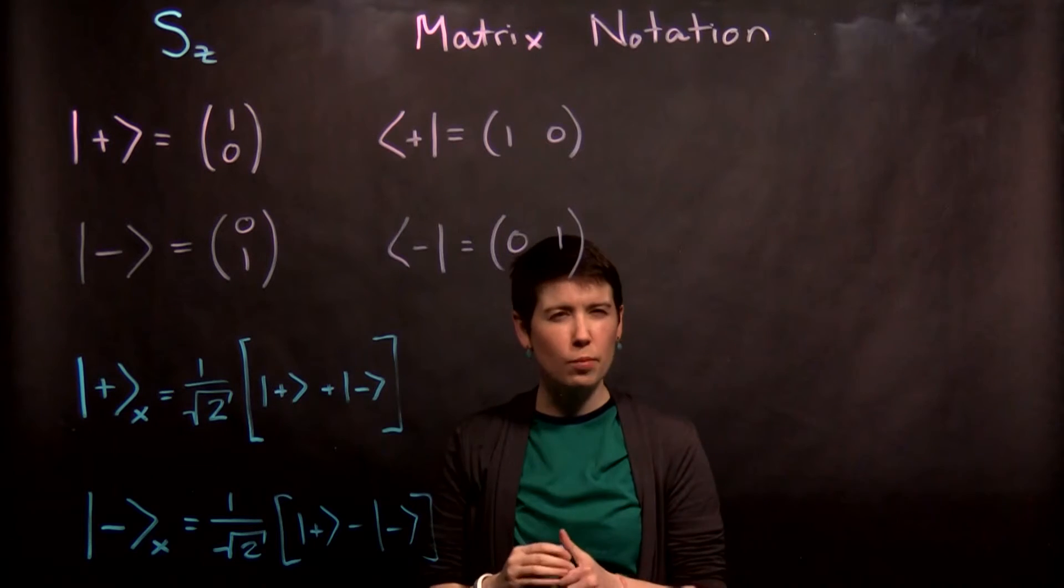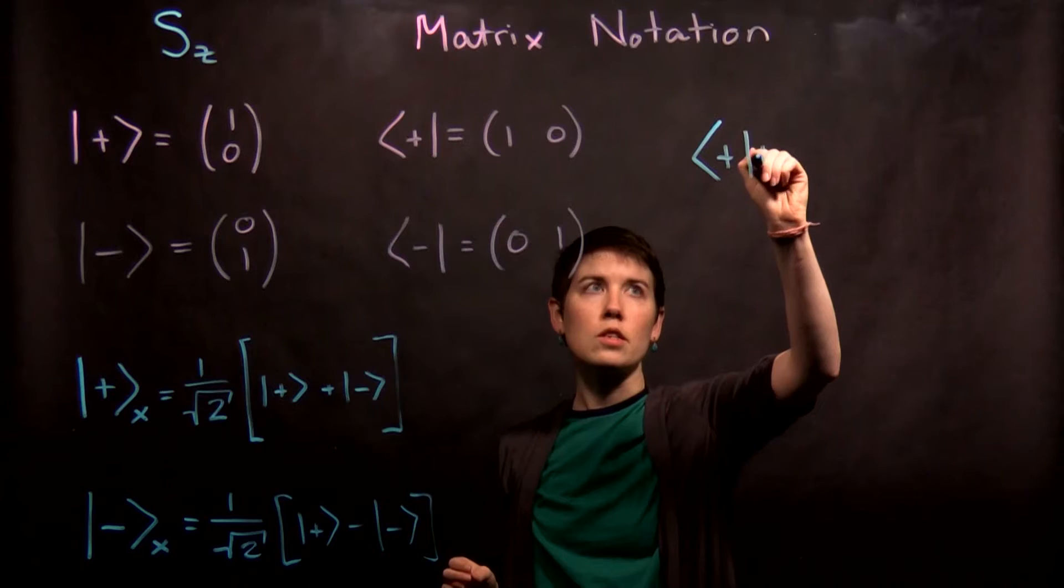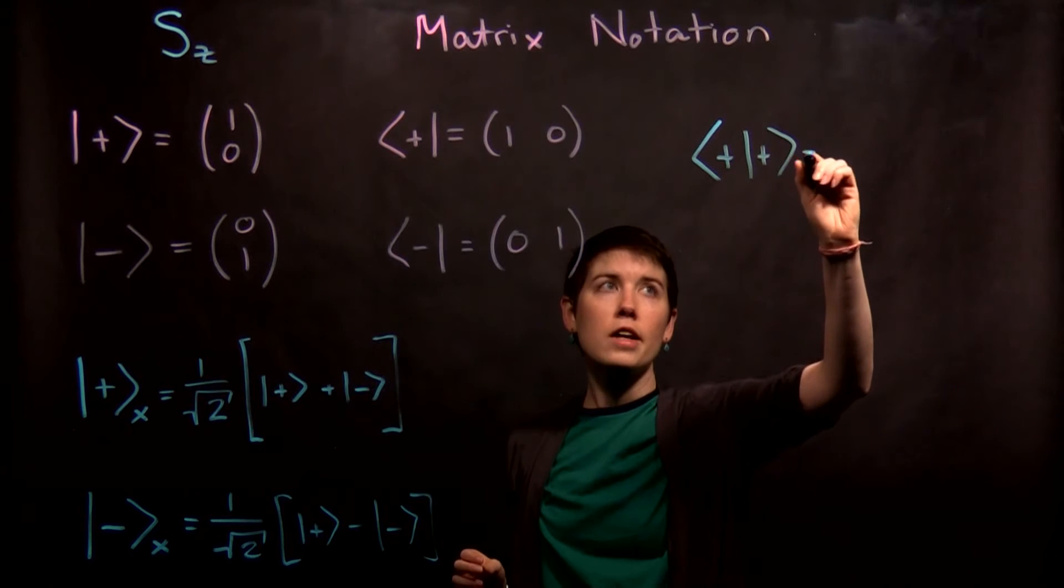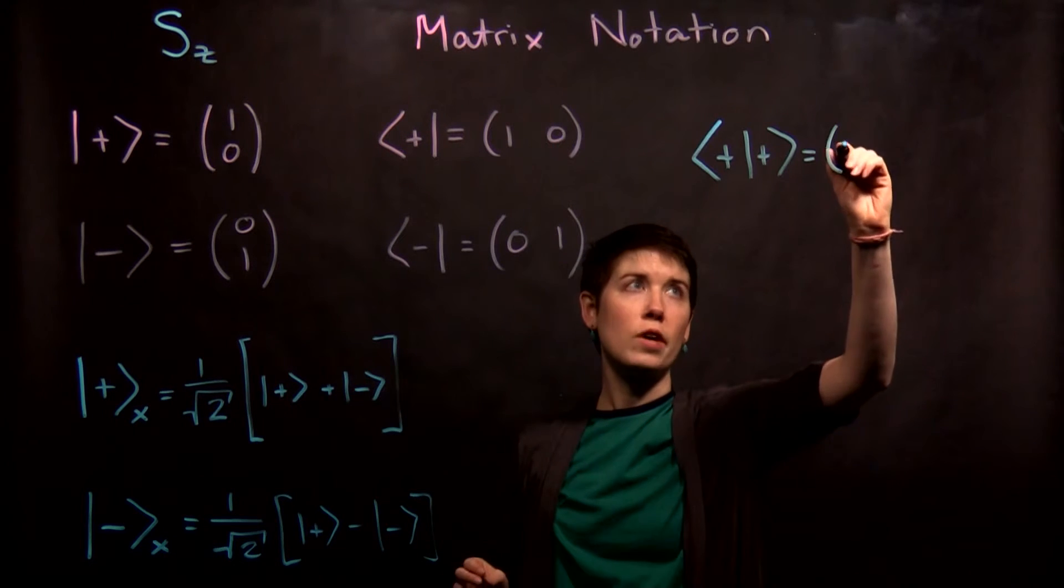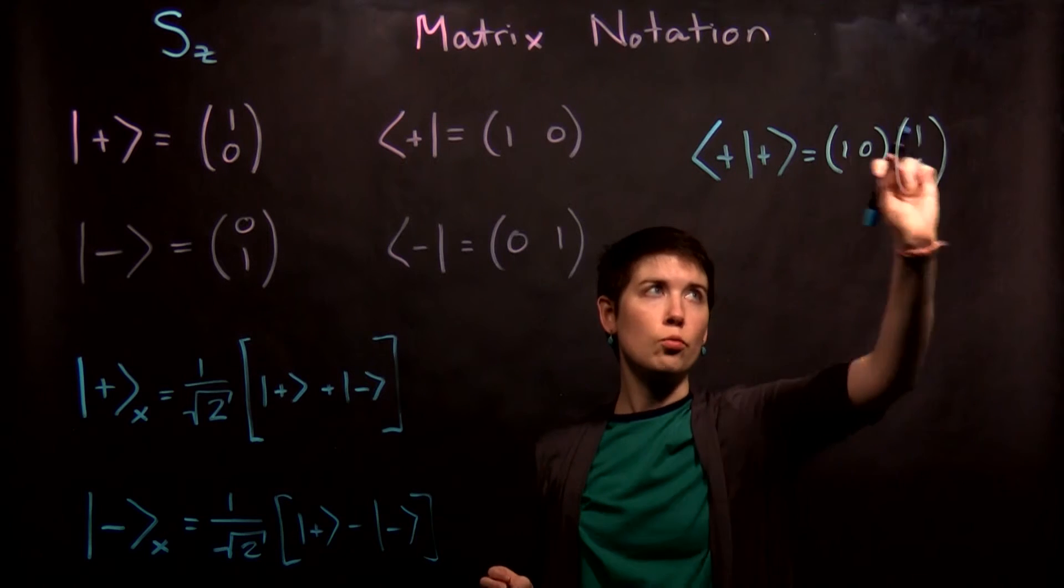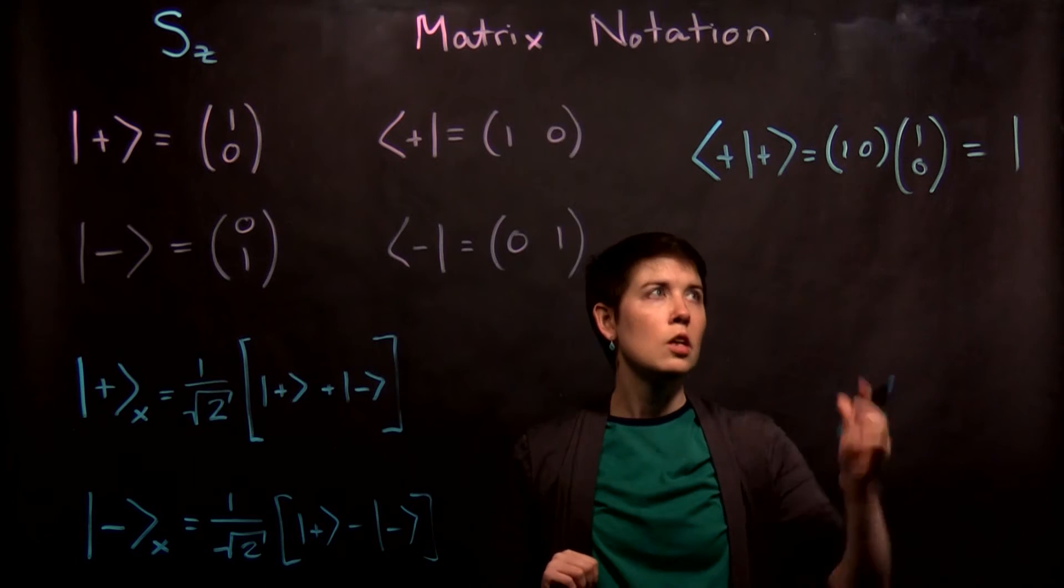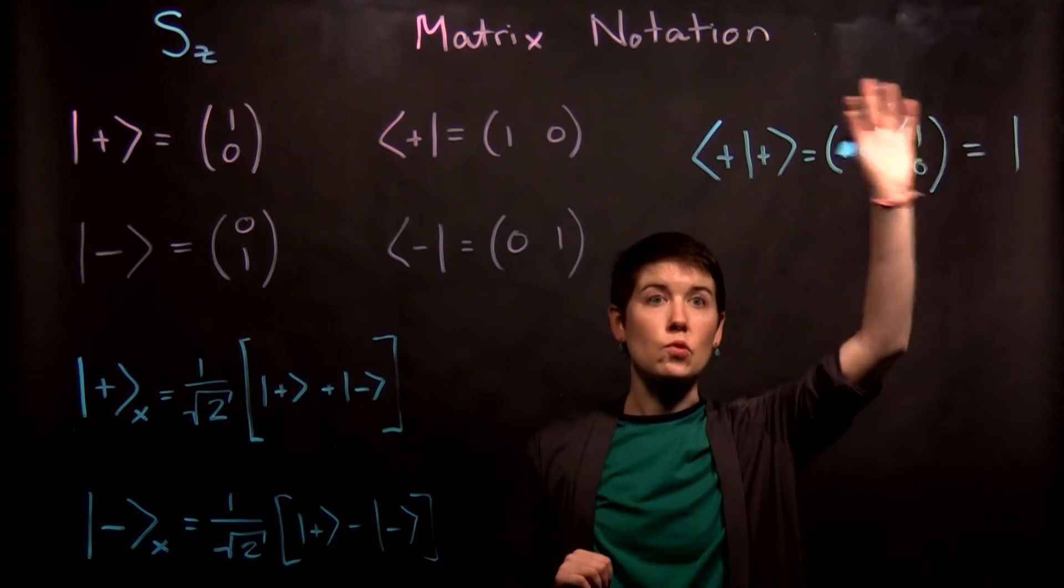And where you can think about this, if you start to get confused, is we can do something like this inner product. If we have this as our row vector, one zero, multiplied by our column vector—when we go row, column, that equals one. That's interesting. That works out, this agrees, this is self consistent.